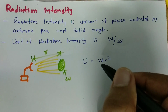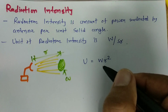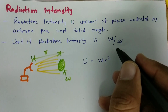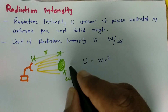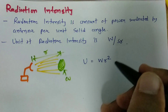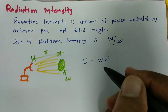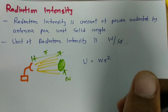As we know, power density is measured in watts per meter squared. So watts per meter squared multiplied by meter squared — the meter squared will get cancelled — and the unit of radiation intensity will be watt per steradian. That is how we calculate radiation intensity.